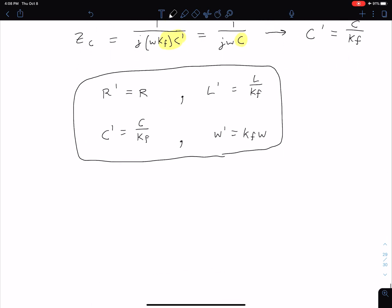The primed values are our new values after scaling. Unprimed values are before scaling.